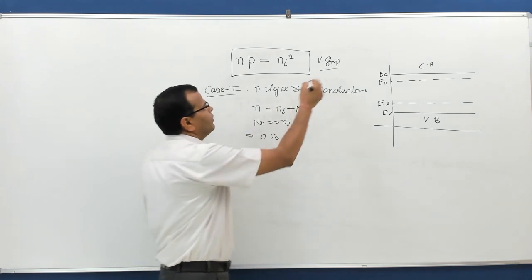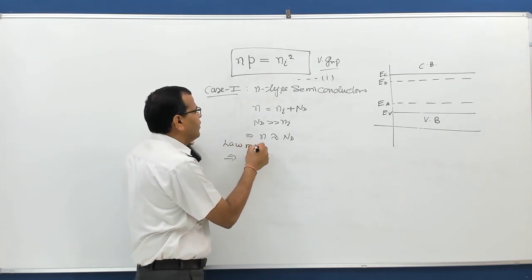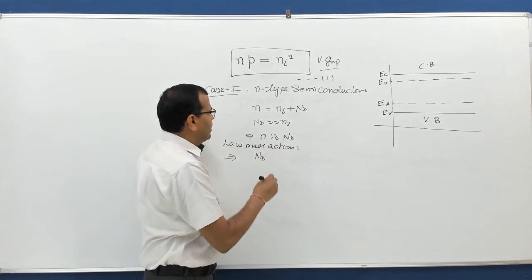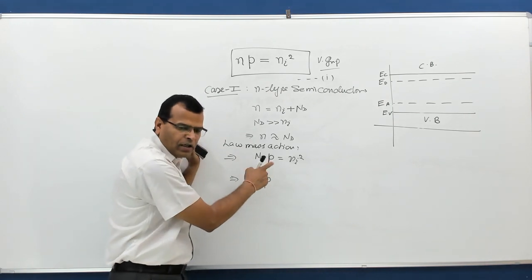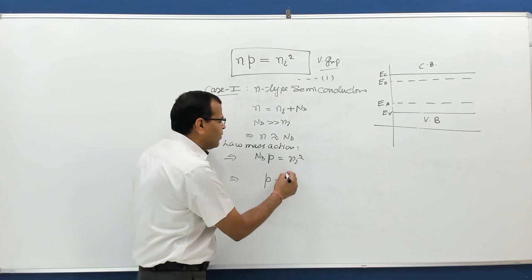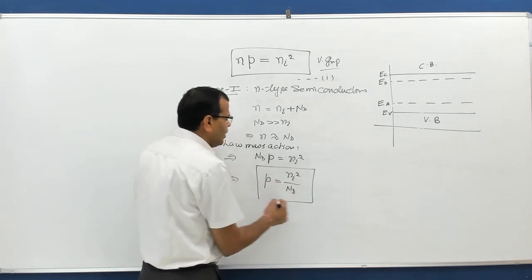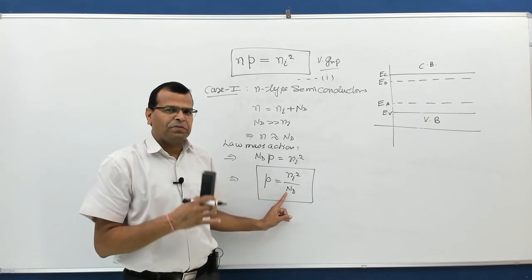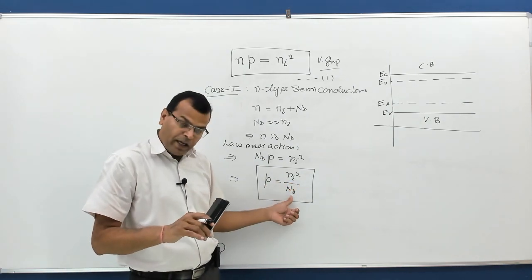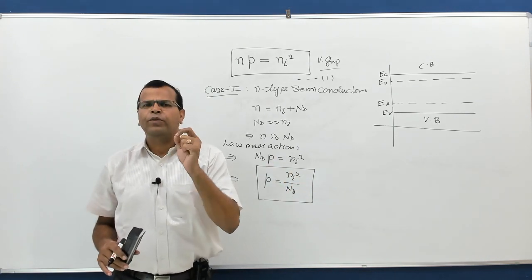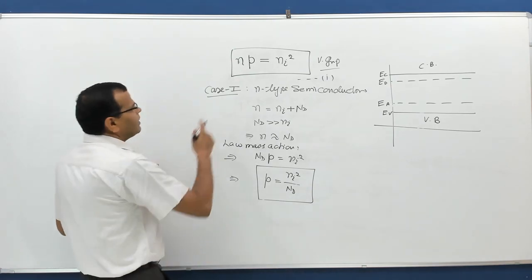Applying the law of mass action for n-type material: Nd × p = ni², giving the minority carrier concentration p = ni²/Nd. Since Nd is much greater than ni, p will definitely be less than ni. This confirms that the concentration of holes in the valence band reduces below the intrinsic level in n-type semiconductors due to increased recombination rate.